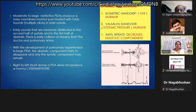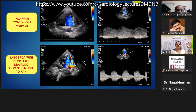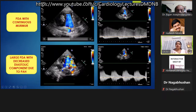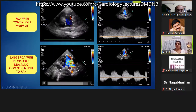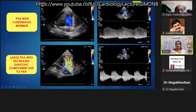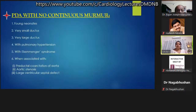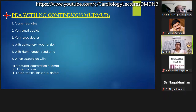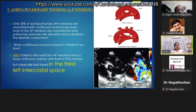This is the phonocardiogram for PDA murmur showing classical continuous murmur through a restrictive PDA, and a large PDA with decreased diastolic component due to development of pulmonary hypertension. PDA may not have a continuous murmur in young neonates, very small ductus, very large ductus with pulmonary hypertension, Eisenmengerized ductus, or when associated with preductal coarctation, aortic stenosis, or large VSD.